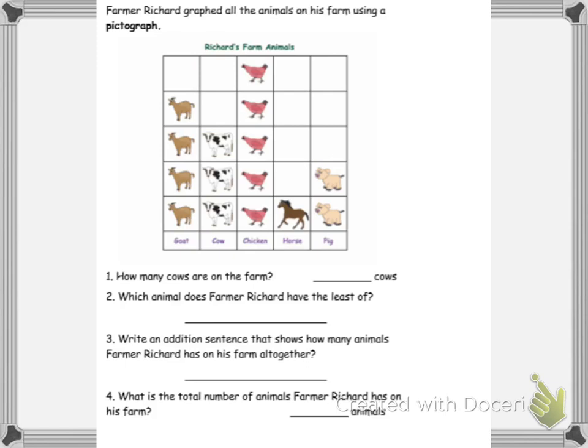So looking at this, we have Richard's farm animals. So this is the graph that he had for all of his animals that are on his farm. This is a pictograph, so each picture represents one animal. You have goats, cows, chickens, horses, and pigs.